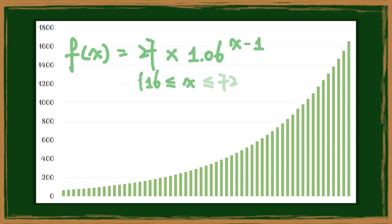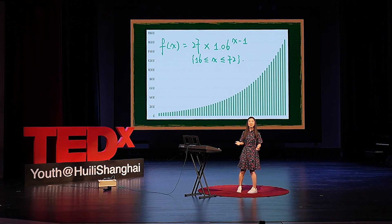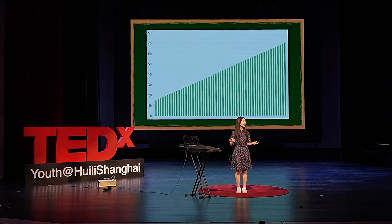And even more shockingly, if we plot the logarithms of the frequencies against the notes instead of their actual frequencies, the picture of the piano becomes linear.